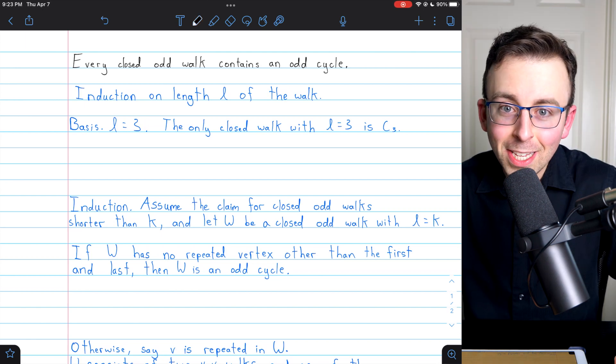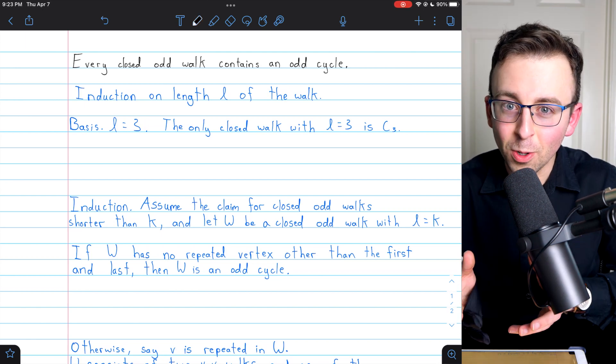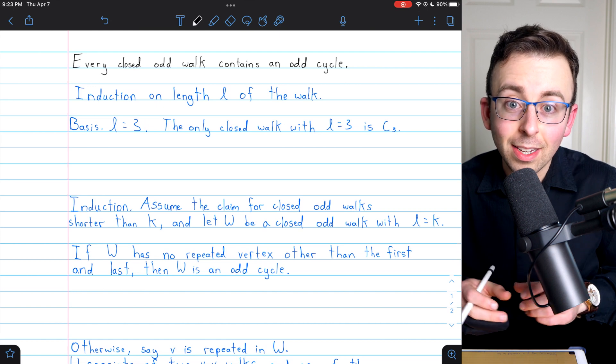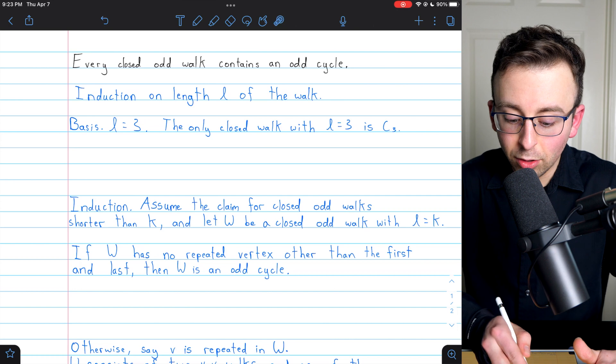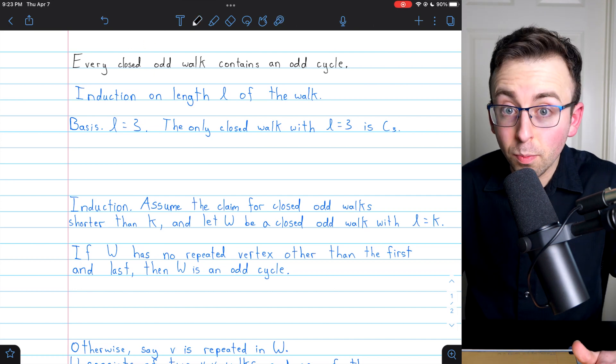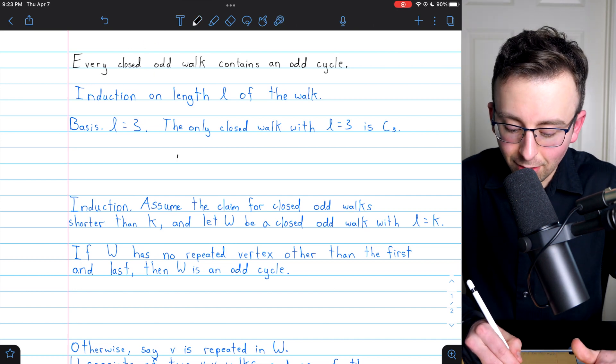I know I said no more dilly-dallying, just a couple more things real quick. I want to point out that a closed even walk doesn't have to contain a cycle at all. So odd walks are special in this way.